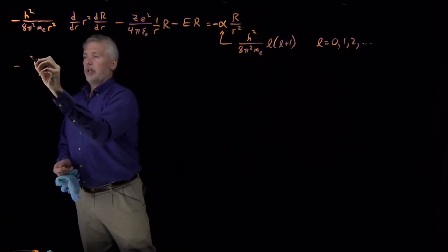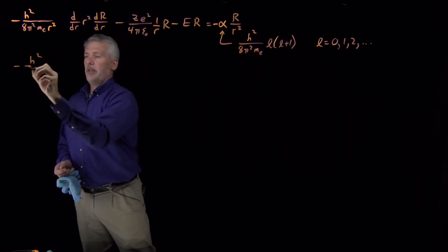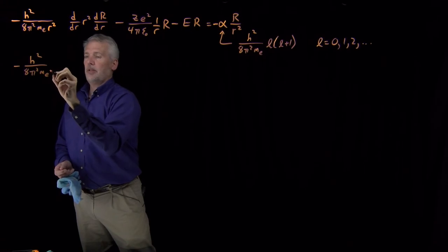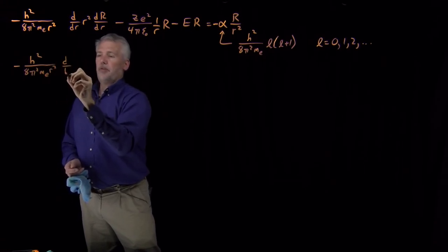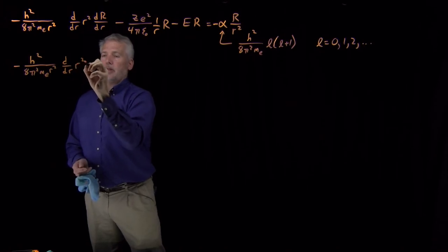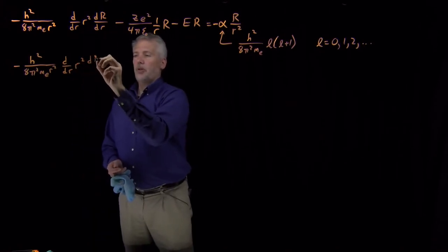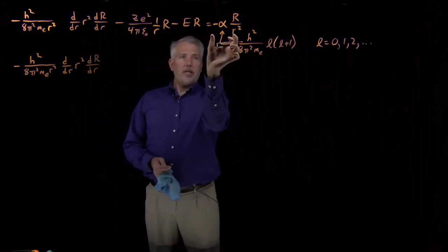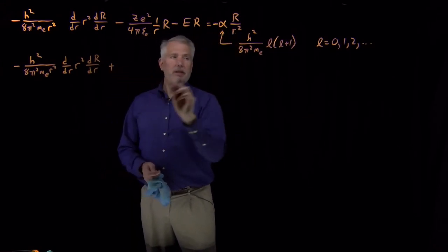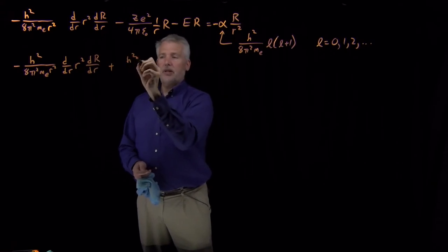If I rewrite that equation, it'll look like minus h squared over 8 pi squared, mass R squared, and then these derivatives of the function R that we're looking for. I'll take this term next, so this minus alpha becomes a plus.